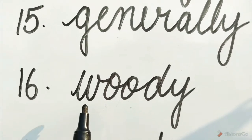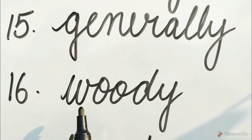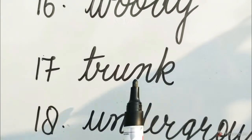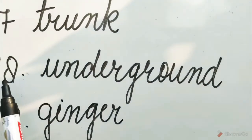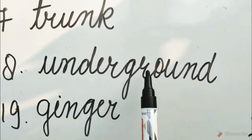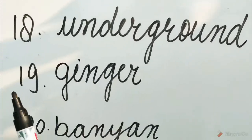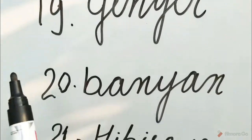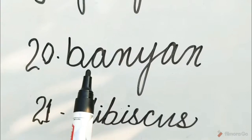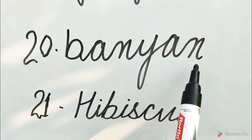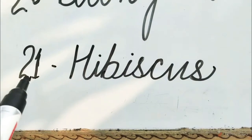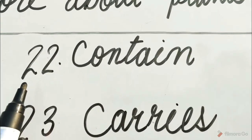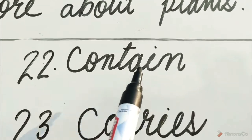Number 16: W-O-O-D-Y, woody. Number 17: T-R-U-N-K, trunk. Number 18: U-N-D-E-R-G-R-O-U-N-D, underground. Number 19: G-I-N-G-E-R, ginger. Number 20: B-A-N-Y-A-N, bunyan. Number 21: H-I-B-I-S-C-U-S, hibiscus. Number 22: C-O-N-T-A-I-N, contain.